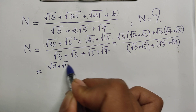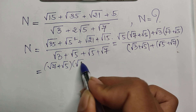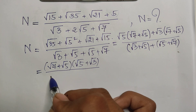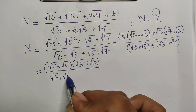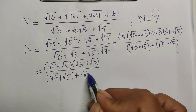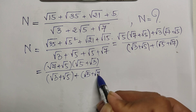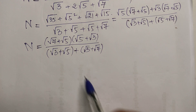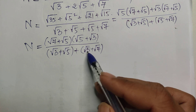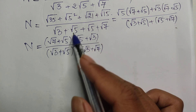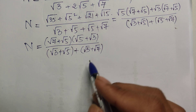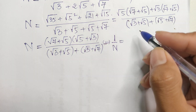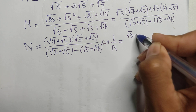I take (√7 + √5) out as a common factor. So n equals (√7 + √5) multiplied by (√5 + √3), divided by (√3 + √5 + √5 + √7). Now I have the expression for n, and I will flip it to find the value of 1/n.